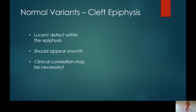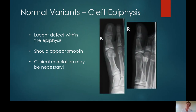Another example of a normal variant is a cleft epiphysis. Here we can see a lucent line within that proximal phalanx epiphysis. These appearances are more concerning for a fracture, but bear in mind this is an example of a normal variant. The lucent line looks quite smooth and fits together quite nicely. In these kind of cases, clinical correlation may well be necessary — does it actually hurt the patient there? And similarly, x-raying the other side may not look the same.